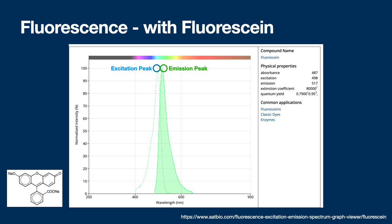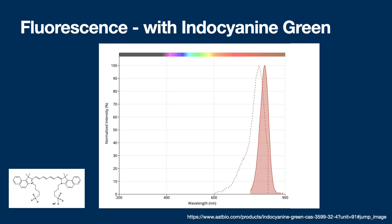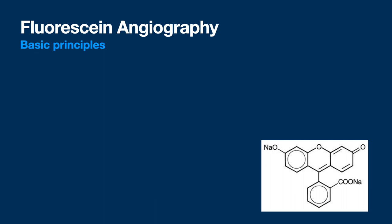The BCSC talks about using a camera-based or flash-based excitation versus a laser scanning laser ophthalmoscope (SLO), and there are pros and cons to both. There are a lot of different ways you can do fluorescence and autofluorescence. Indocyanine green works in the near-infrared and is the only FDA-approved near-infrared fluorescence agent for medical use. We'll have three main sections: fluorescein angiography, ICGA, and autofluorescence.